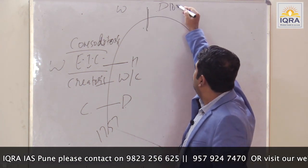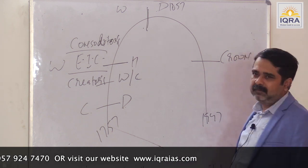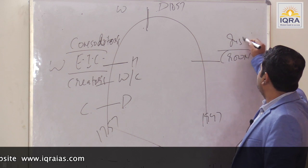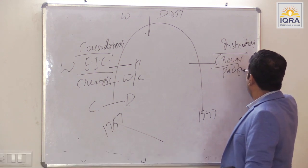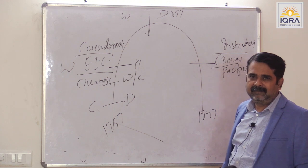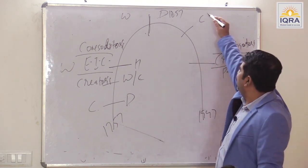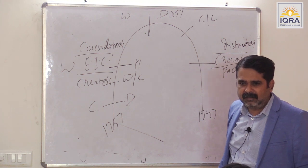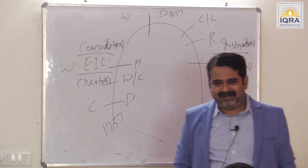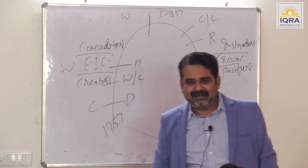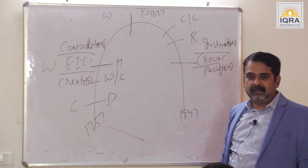From 1857 to 1947 — this is the Crown phase. In this part you will find instigators and pacifiers. Canning and Lytton are instigators.